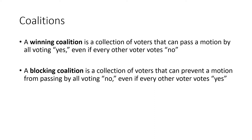To summarize: a winning coalition is a collection of voters that can pass a motion by all voting yes, even if every other voter votes no. A blocking coalition is a collection of voters that can prevent a motion from passing by all voting no, even if every other voter votes yes. It's a little bit harder to be a winning coalition because you have to have more votes.